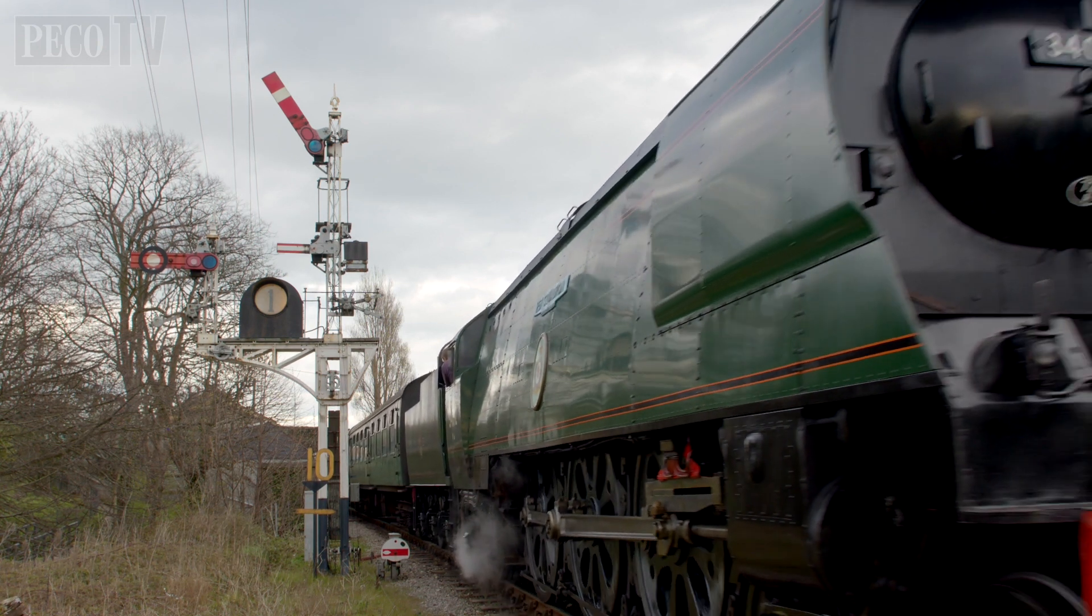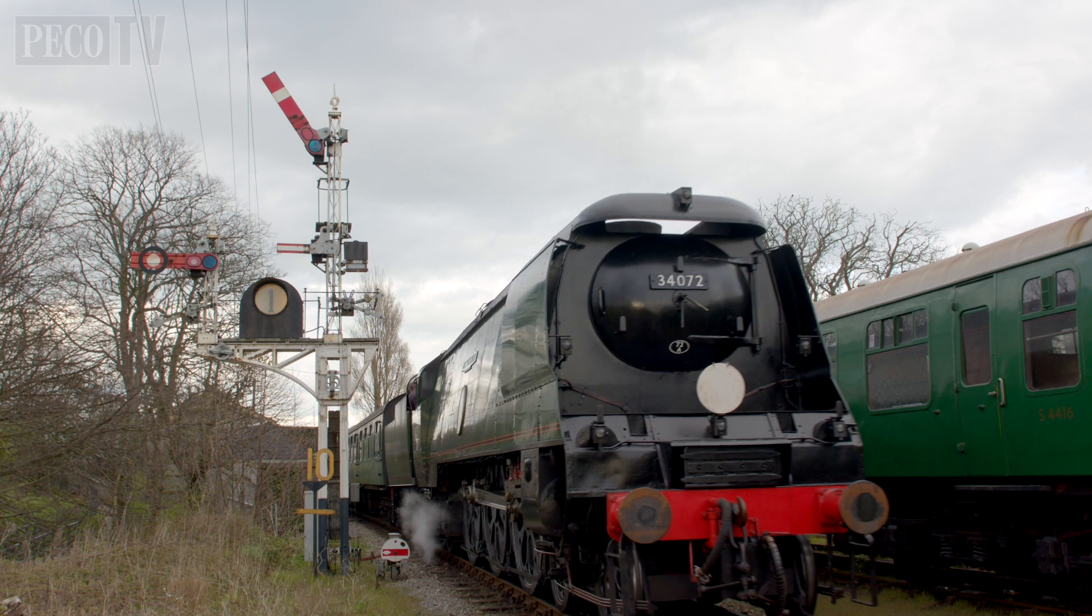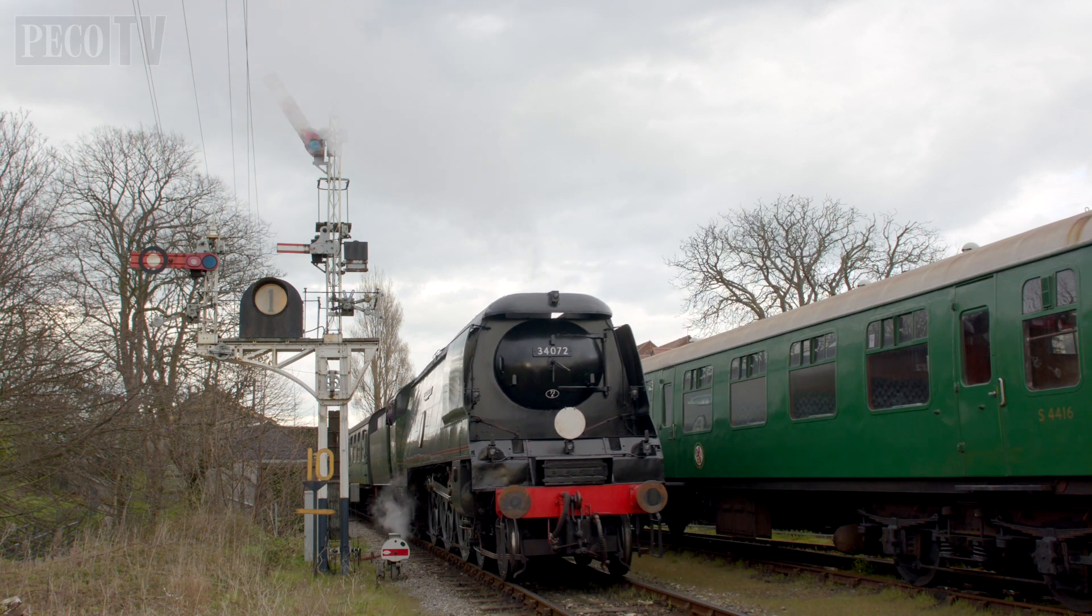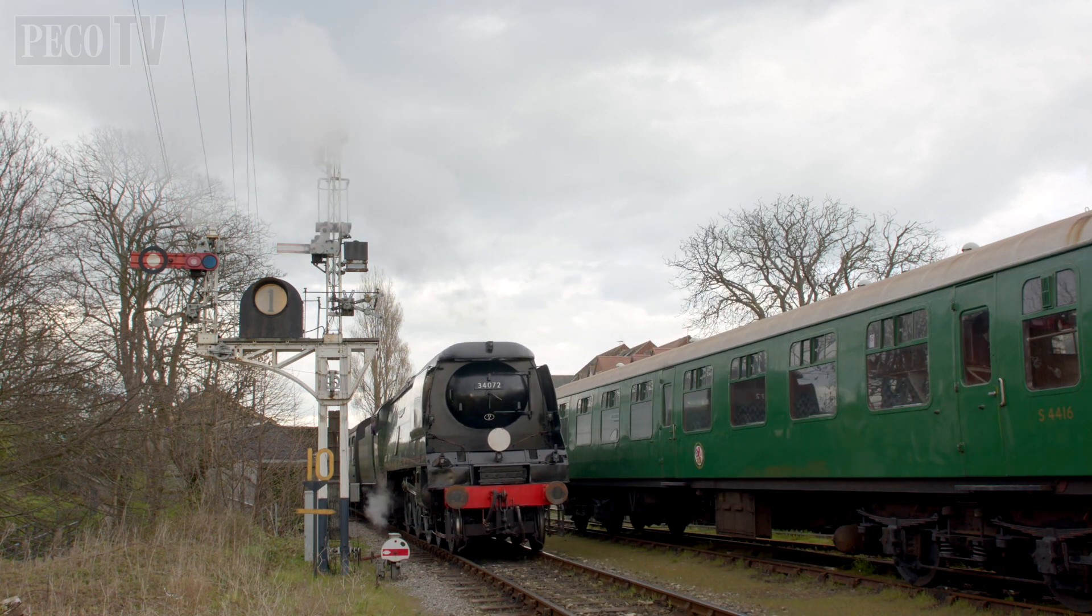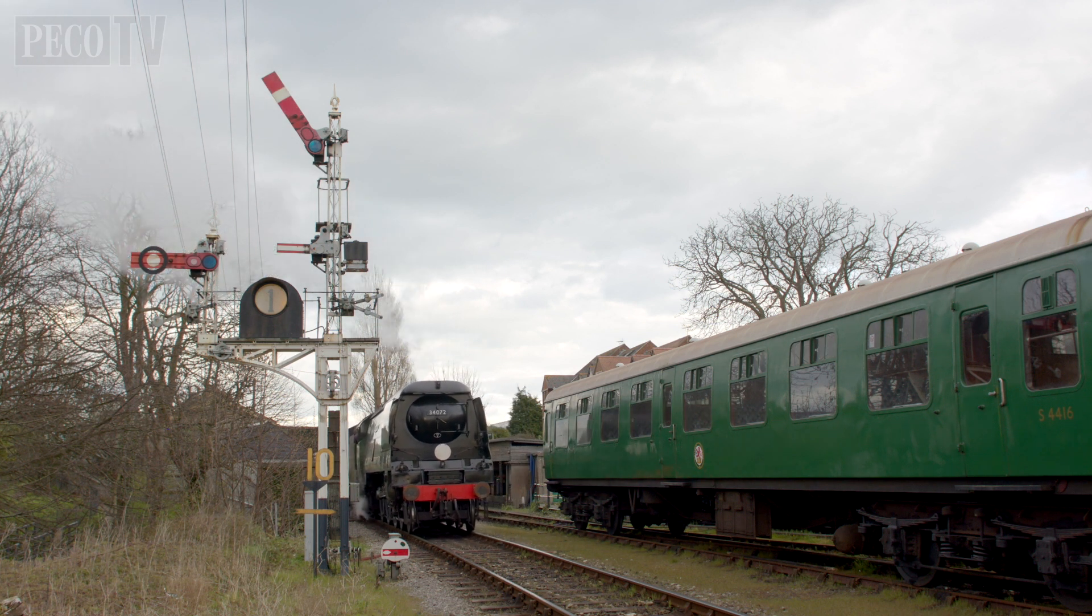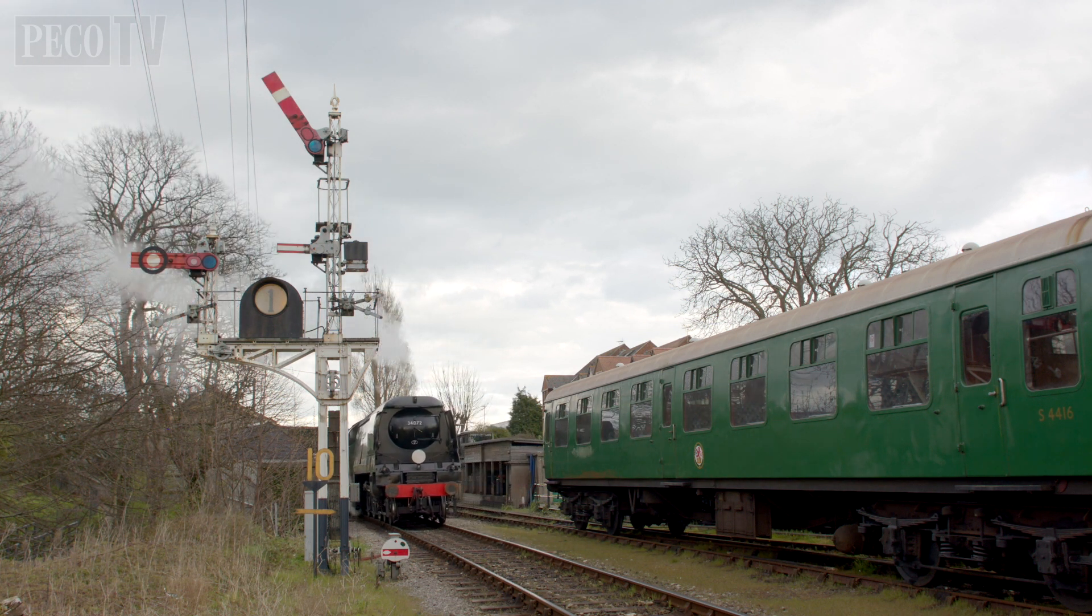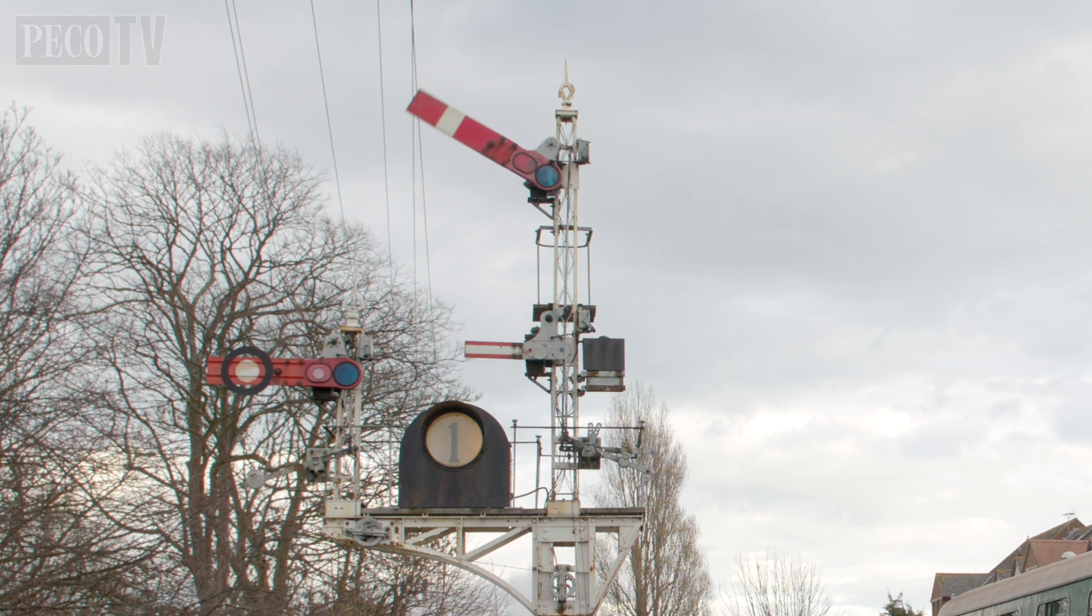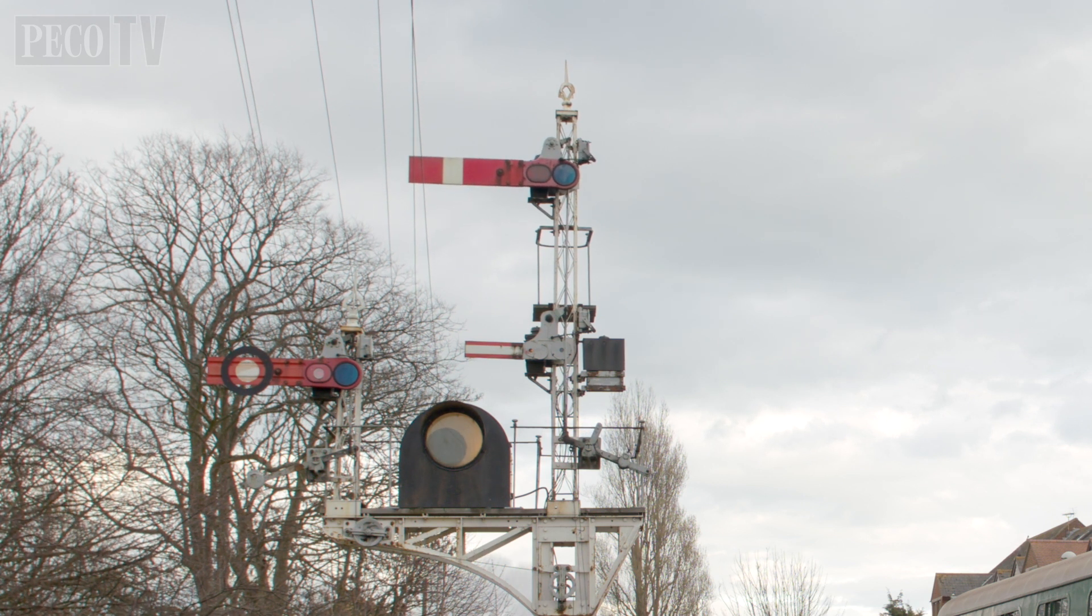The Swanage Railway and the Severn Valley Railway have kindly given us access to their signals. The definition of a railway signal is a visual device that conveys instructions or provides advanced warnings of instructions regarding the driver's authority to proceed.